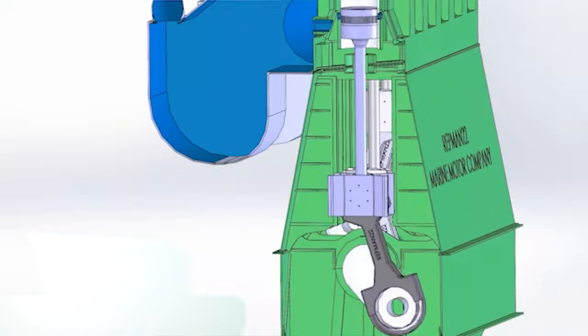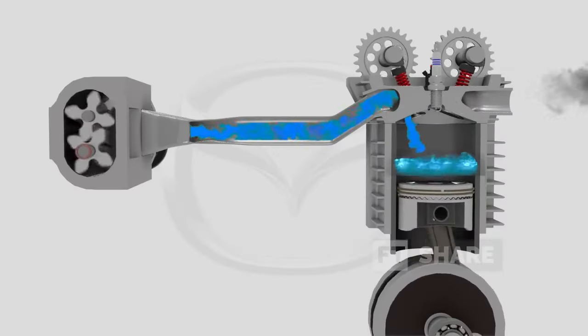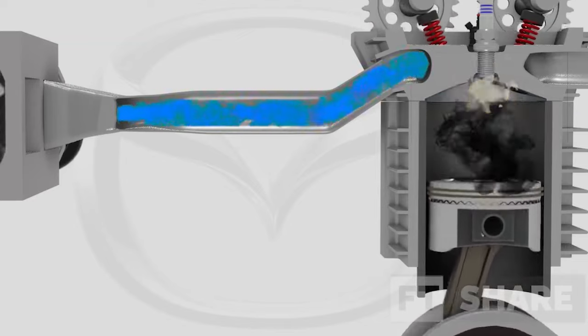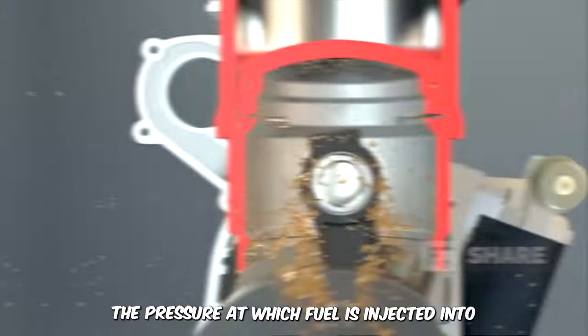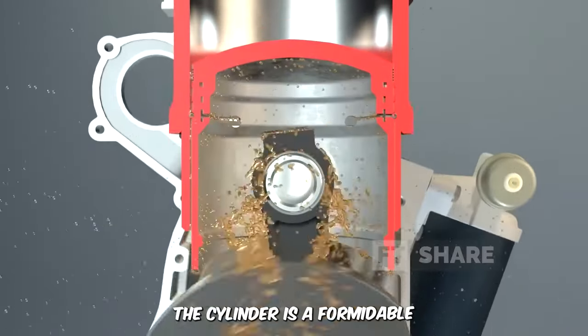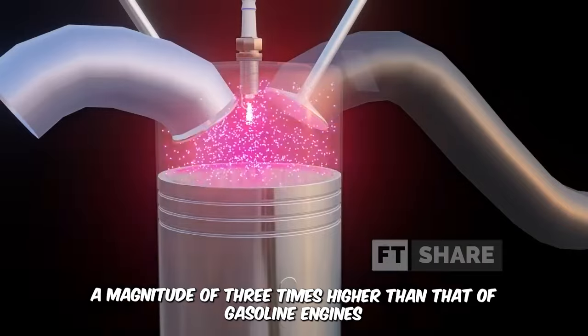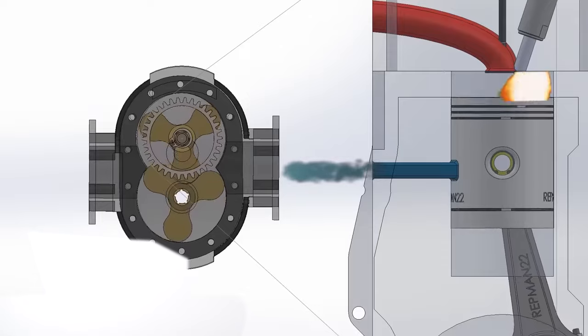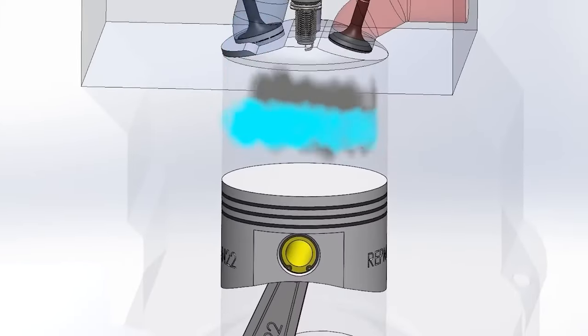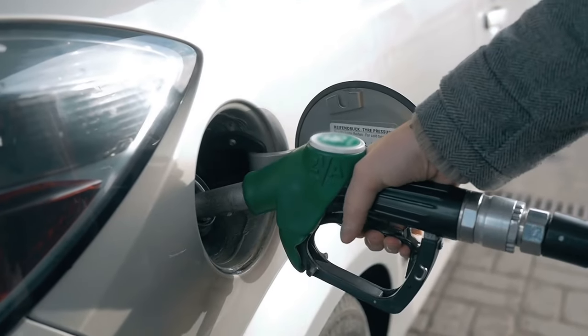And the similarities with the diesel engine don't end there. The air-fuel mix is at a smooth 14.7 to 1, nodding to the diesel engine's 15 to 1 ratio. The pressure at which fuel is injected into the cylinder is a formidable 700 bars, a magnitude three times higher than that of gasoline engines, and nearly comparable to the injection pressure in diesel engines. This strategic move significantly elevates the engine's performance under low loads, resulting in commendable fuel efficiency.